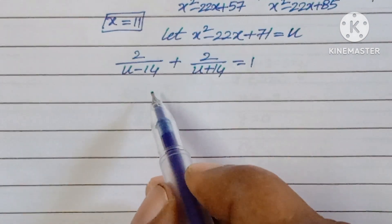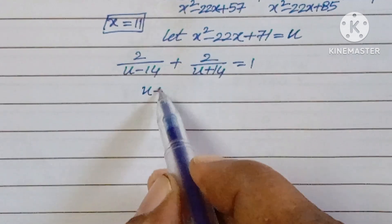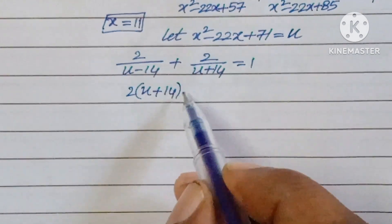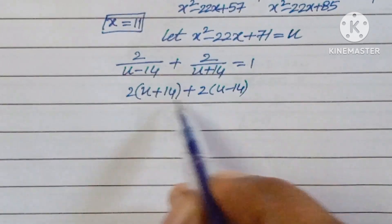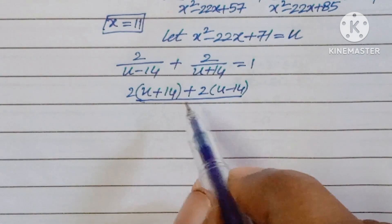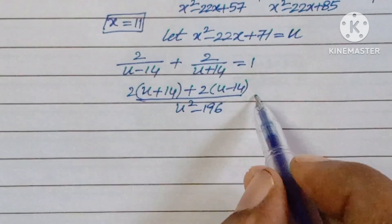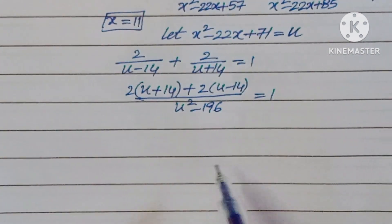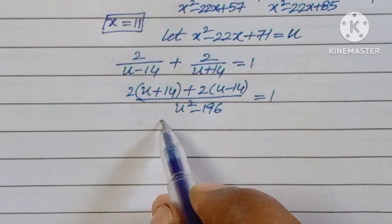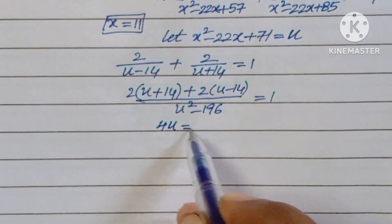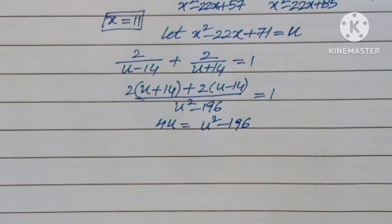Taking the LCM: 2(u plus 14) plus 2(u minus 14) over (u squared minus 196) equals 1. The constant terms cancel in the numerator, giving 4u equals u squared minus 196.